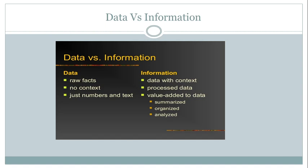In healthcare information systems, you basically handle data and information. So now we will see what is the difference between data and information. Data are raw facts without context, but information is data with context and it is processed. Data are just numbers, but information is value-added data which is summarized, organized, or analyzed. For example, the number of deaths of infants from each hospital in a given year and number of live births in each hospital in the same year is called data.